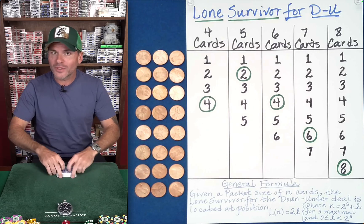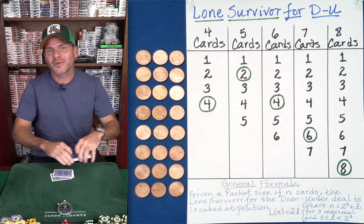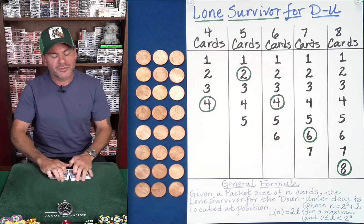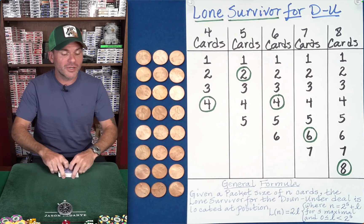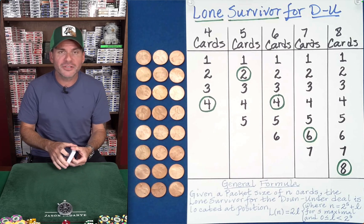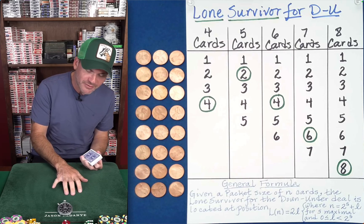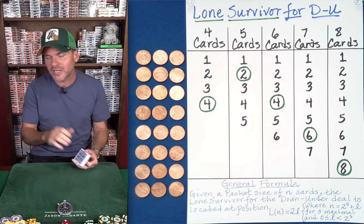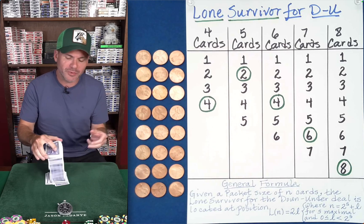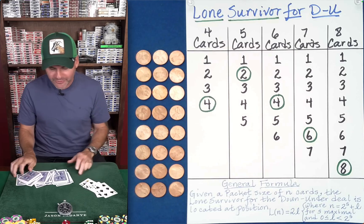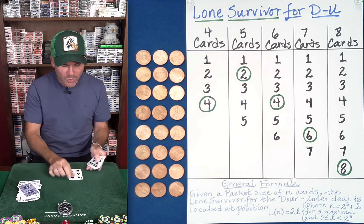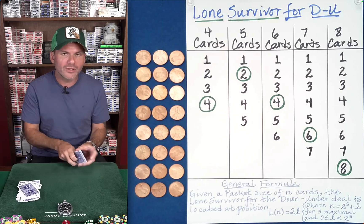Here is another wonderful mathematical card effect by Jason Ladani. For this, you need the spectator to choose four, five, six, seven, or eight random cards. It is a free choice. Jason here chooses five, or assumes the spectator says five, which is fine.